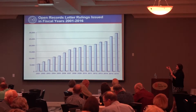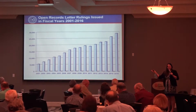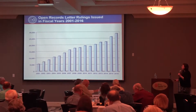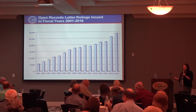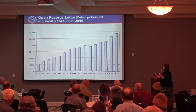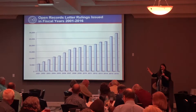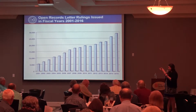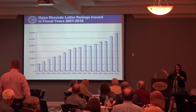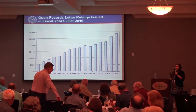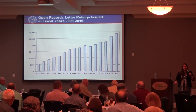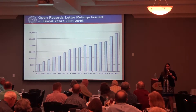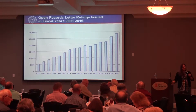The Open Records Division issues Open Records letter rulings. This chart illustrates that a lot of people are doing this — you're not alone. We issued just over 20,000 rulings last year, and we also took 9,000 hotline calls. When she put that hotline number up, call us. We will answer your questions and help you through it.